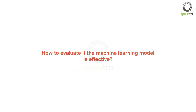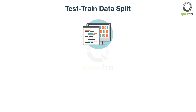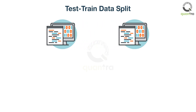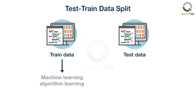How does he evaluate if the machine learning model is effective or has indeed learned something useful? Rather than using the full data, he splits the data into two parts: train and test. The train data is used by the machine learning algorithm to learn the relationship between the feature variables and the target variable.